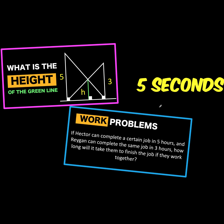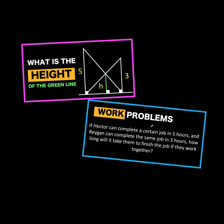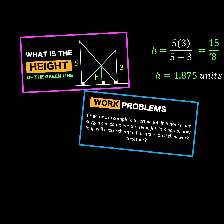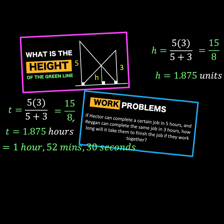Now let's solve this problem together. Don't you know that these two different problems have the same solution? For the first problem, H is equal to 15 over 8. And for the second problem, the time is also equal to 15 over 8. If you have a calculator, you can divide 15 over 8 to get 1.875 units. But without calculators, the answer for both of them is 15 over 8.